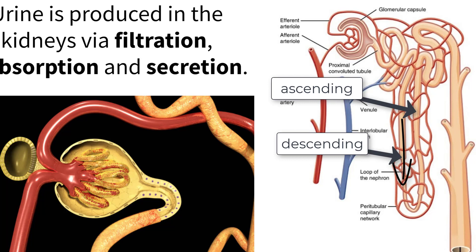The ascending limb moves the contents back towards the cortex to the next structure, called the distal convoluted tubule. This tube then connects to the final piece of the nephron, called the collecting duct.